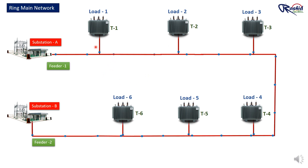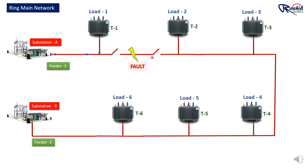We can simply add switches and circuit breakers to control and protect the system. For example, I can install switches between the load and feeders, and also add a circuit breaker or load break switch with fuse to protect the transformer. As shown here, all transformers are getting power from substation A through Feeder 1. If there is a fault in Feeder 1 between Transformers 1 and 2, we can fix it by turning off the breaker on both sides of the fault section, which safely disconnects the faulty part so that the technician can work on it.